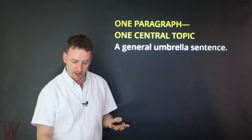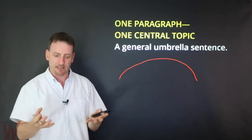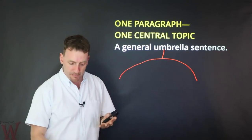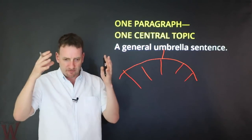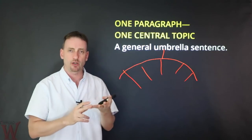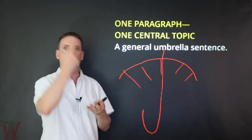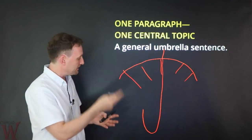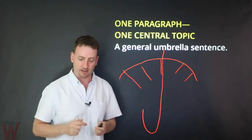Think of it as an umbrella sentence. You have your topic sentence, which covers basically everything that comes underneath it. It is connected to the thesis of the whole essay, but it has its own ideas. Everything that you write in that paragraph is flowing from the topic sentence and focusing on the main idea — supporting it, elaborating on it, giving examples — and then it all ties together and reconnects back to the overall thesis of the essay. It covers everything. Very focused, very narrowed approach.